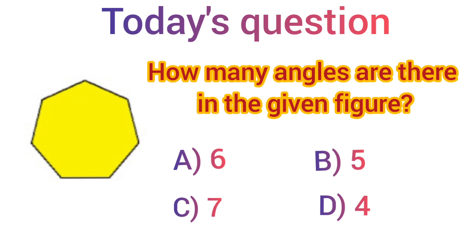Today's question: how many angles are there in the given figure? We have four options. Option A: 6 angles. Option B: 5 angles. Option C: 7 angles. And option D: 4 angles. See this figure carefully. Let's count number of angles in this figure: 1, 2, 3, 4, 5, 6, and 7. There are 7 angles in this figure. So our correct answer is option C, 7 angles.